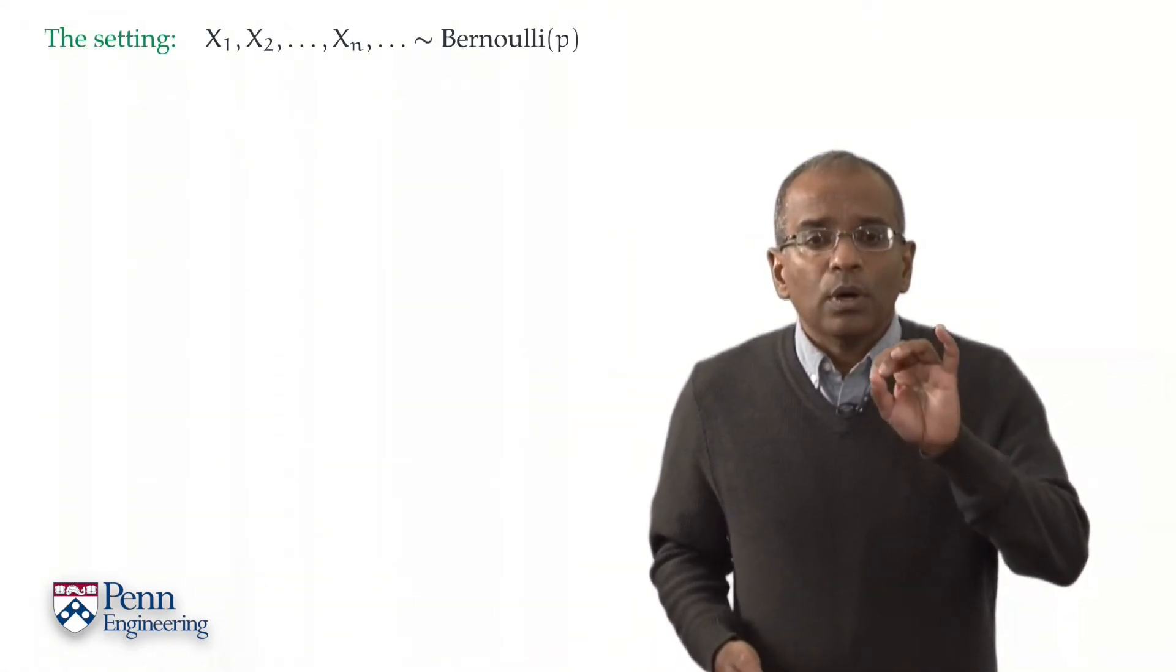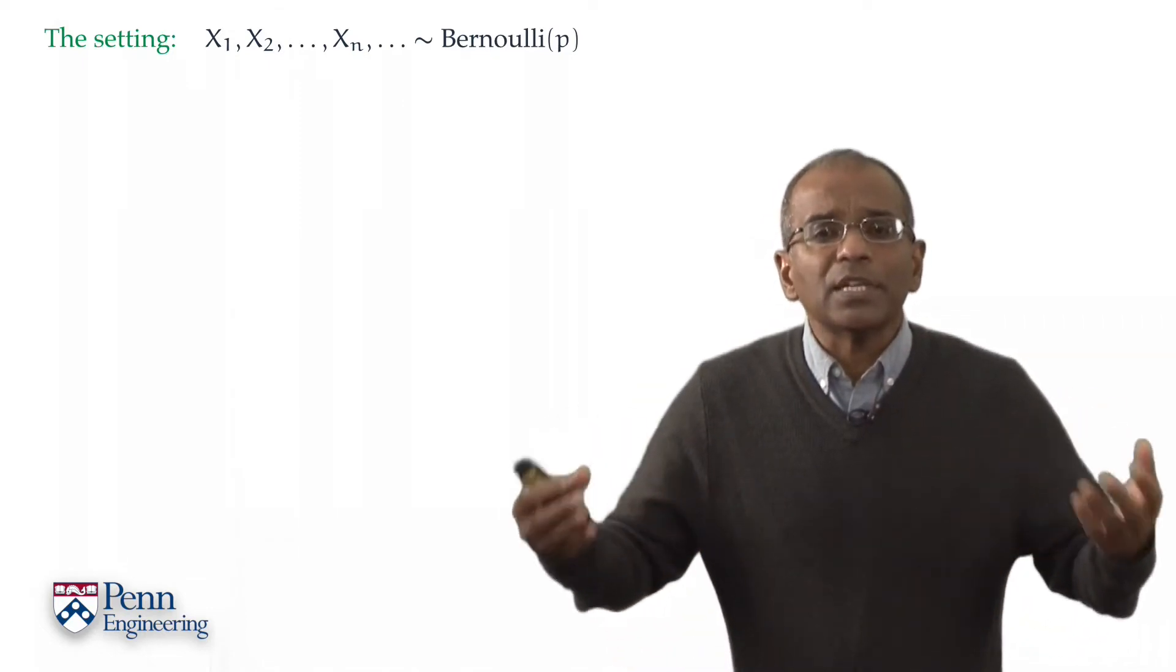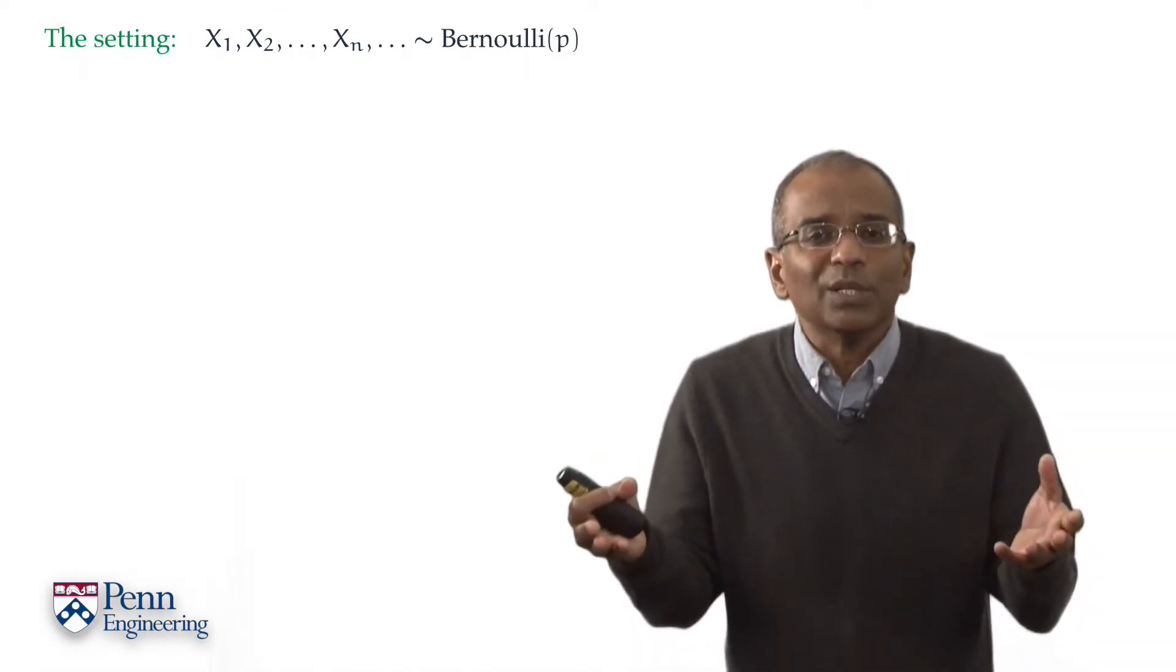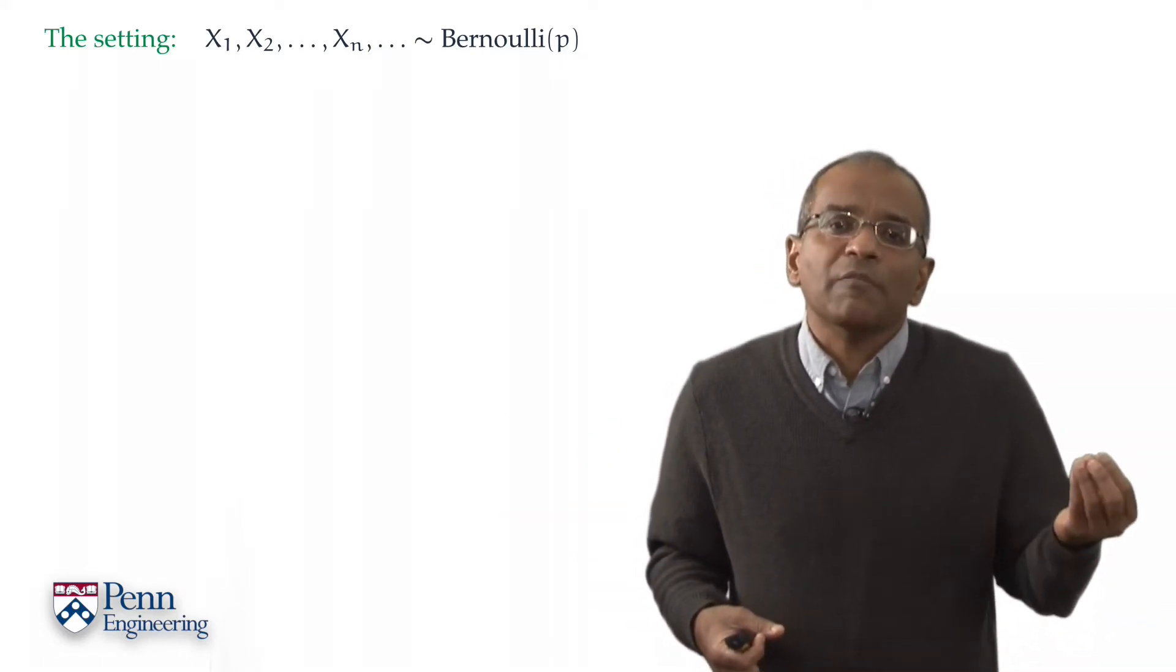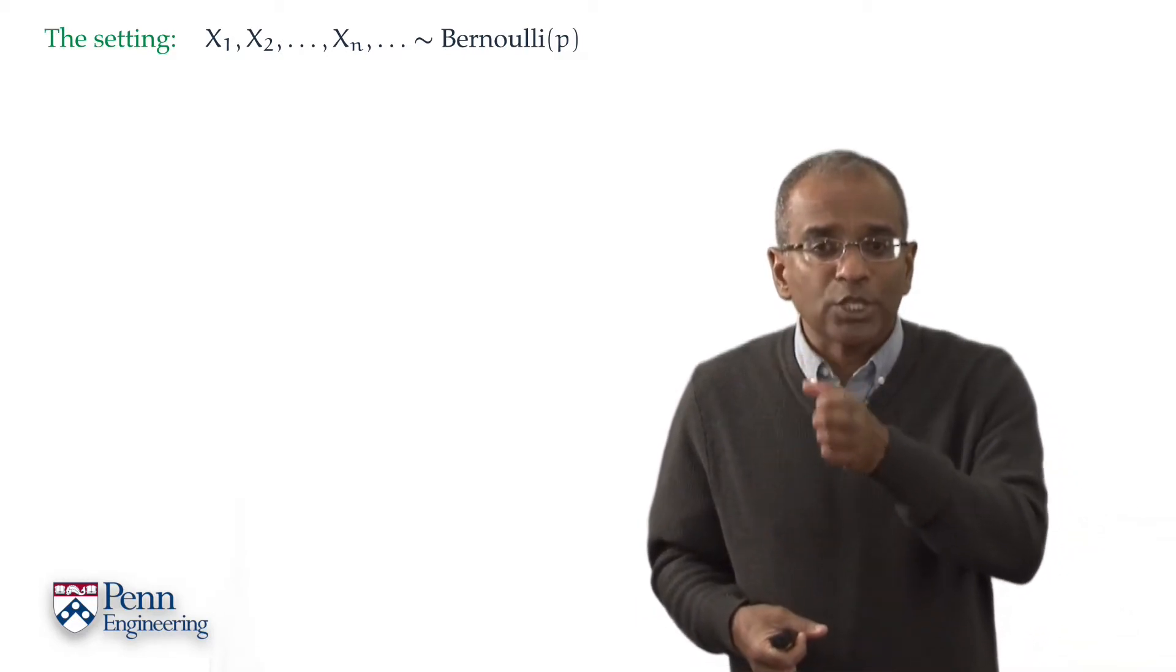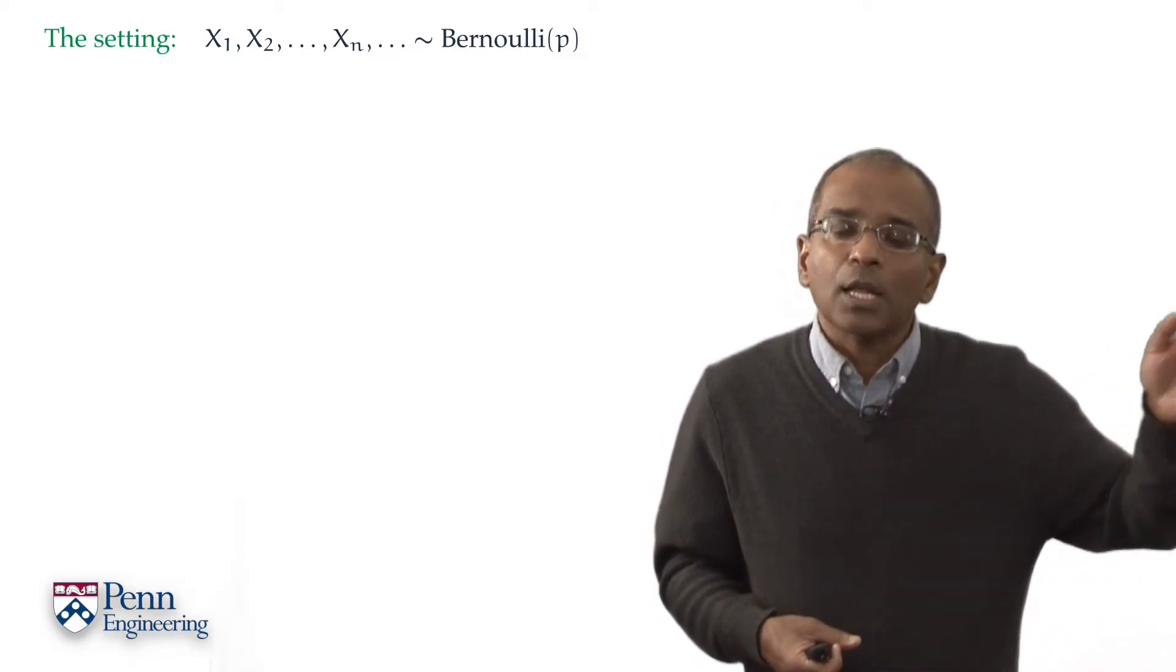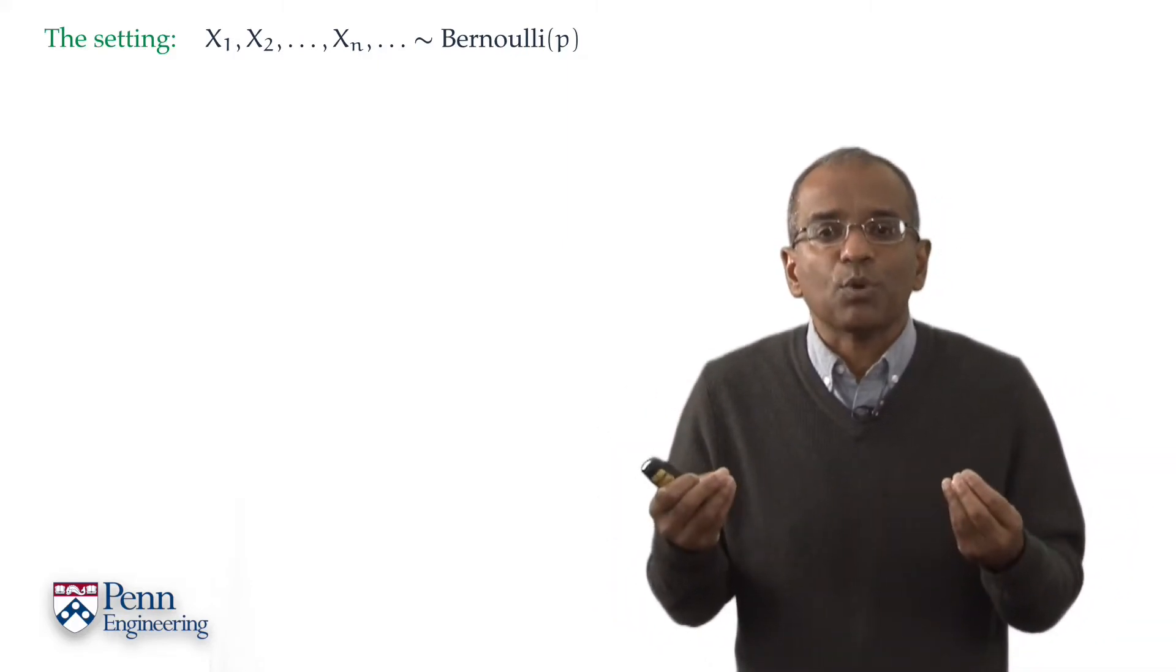So let's start with the setting. Our basic setting is that of repeated independent trials, and to begin we are going to deal with the tosses of a coin whose success probability is some value P between 0 and 1. In other words, X1, X2, X3, Xn and so forth constitute Bernoulli trials with success probability P.